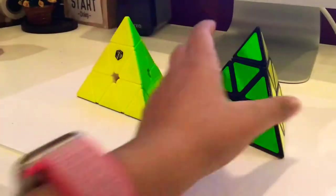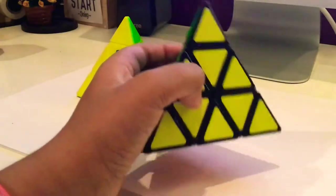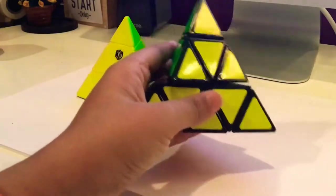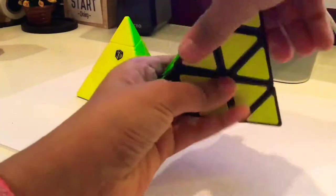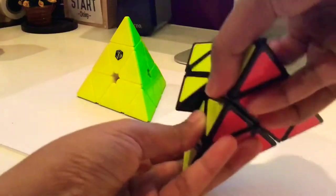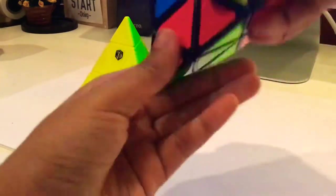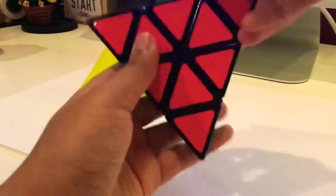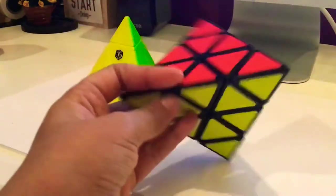For pyraminx, I have two pyraminxes. This is the first pyraminx I got, which is off Amazon. It's a QiYi pyraminx which has ball bearings in it and it doesn't turn that good. There's no corner cutting or anything, but the color shades are extremely nice.